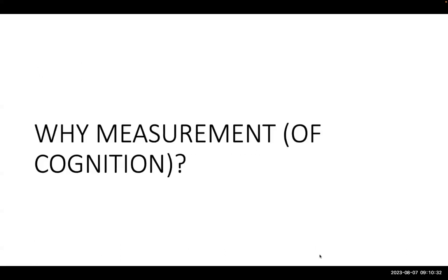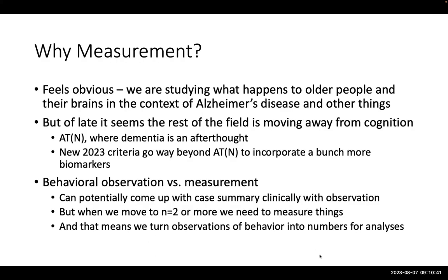I was supposed to have some thoughts on why measurement, why measurement of cognition. My first thought is it feels really obvious — we're studying older people and what happens to their brains in the context of Alzheimer's disease. But of late, this instinctive 'of course we have to measure cognition' is not being appreciated as much by the field, which has introduced things like the ATN framework — amyloid, tau, and neurodegeneration — with no cognition in that, as the very definition of Alzheimer's disease.